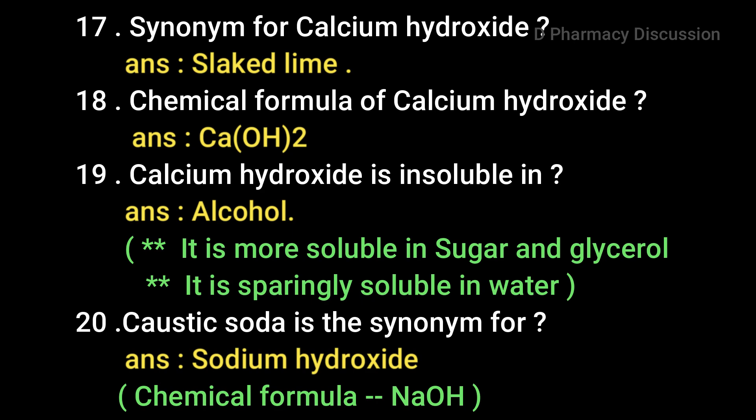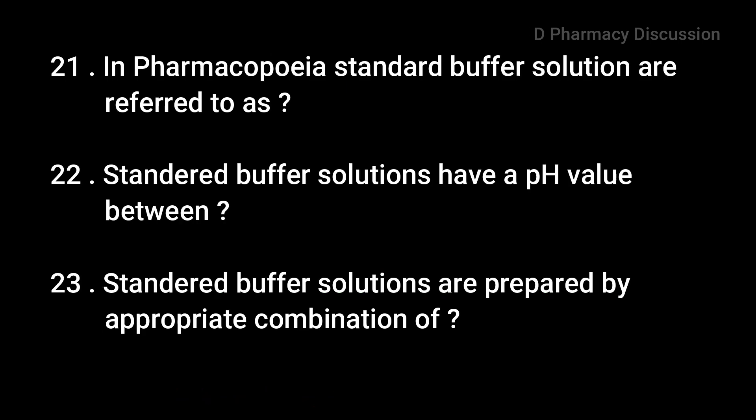Next question: the synonym for Calcium Hydroxide is Slaked Lime. The chemical formula of Calcium Hydroxide is Ca(OH)2. Calcium hydroxide is insoluble in alcohol, more soluble in sugar and glycerol, and sparingly soluble in water. Then: Caustic Soda is the synonym for Sodium Hydroxide, and the chemical formula is NaOH.